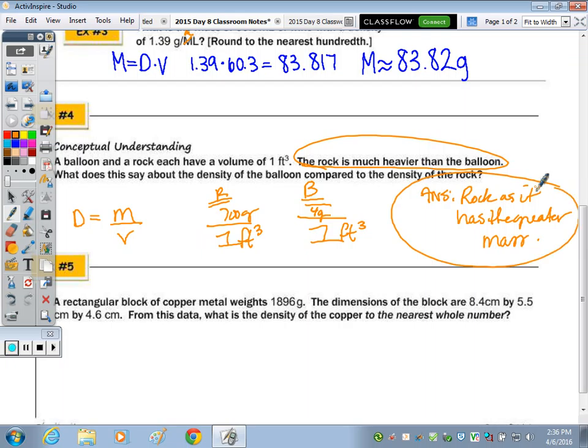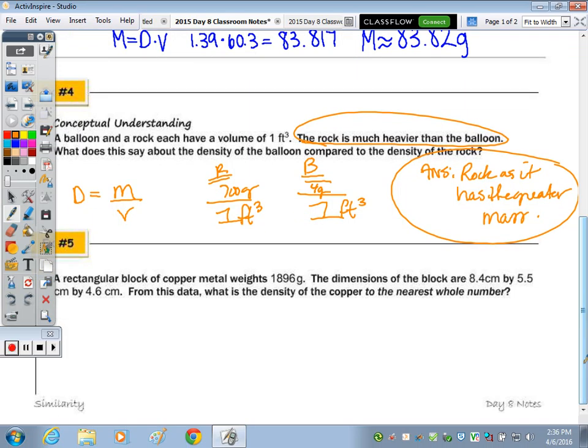So in geometry, instead of just giving you the volume as you saw above in questions one, two, and three, we're going to actually have to do some calculations to determine the volume. We have a rectangular block of copper metal that weighs 1,896 grams. Let's note the mass. The dimensions of the block are 8.4 centimeters by 5.5 by 4.6. From this data, what's the density? So density being mass over volume, we have the 1,896. We need the volume. So volume for a rectangular prism, what's the formula? Length times width times height.